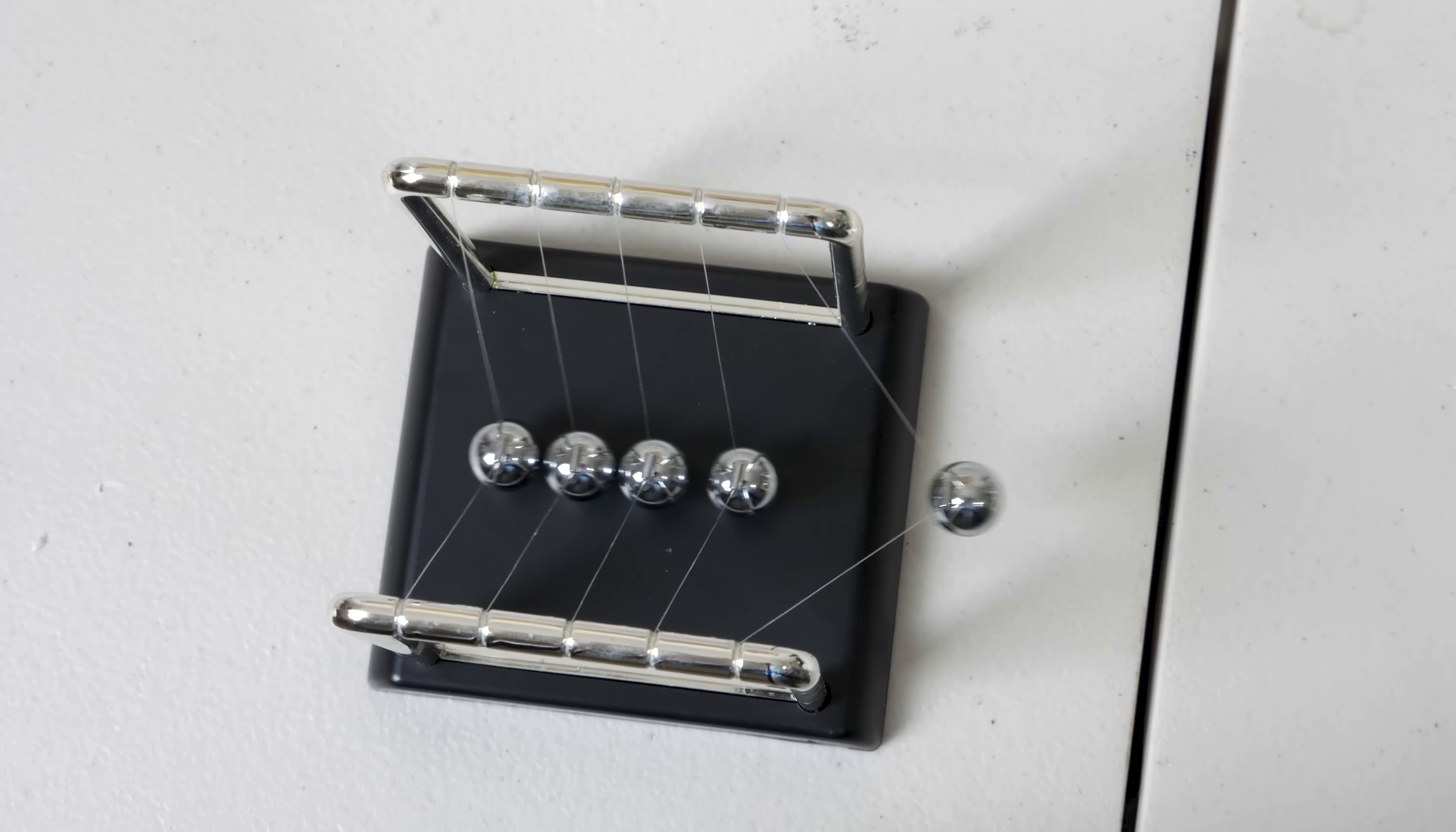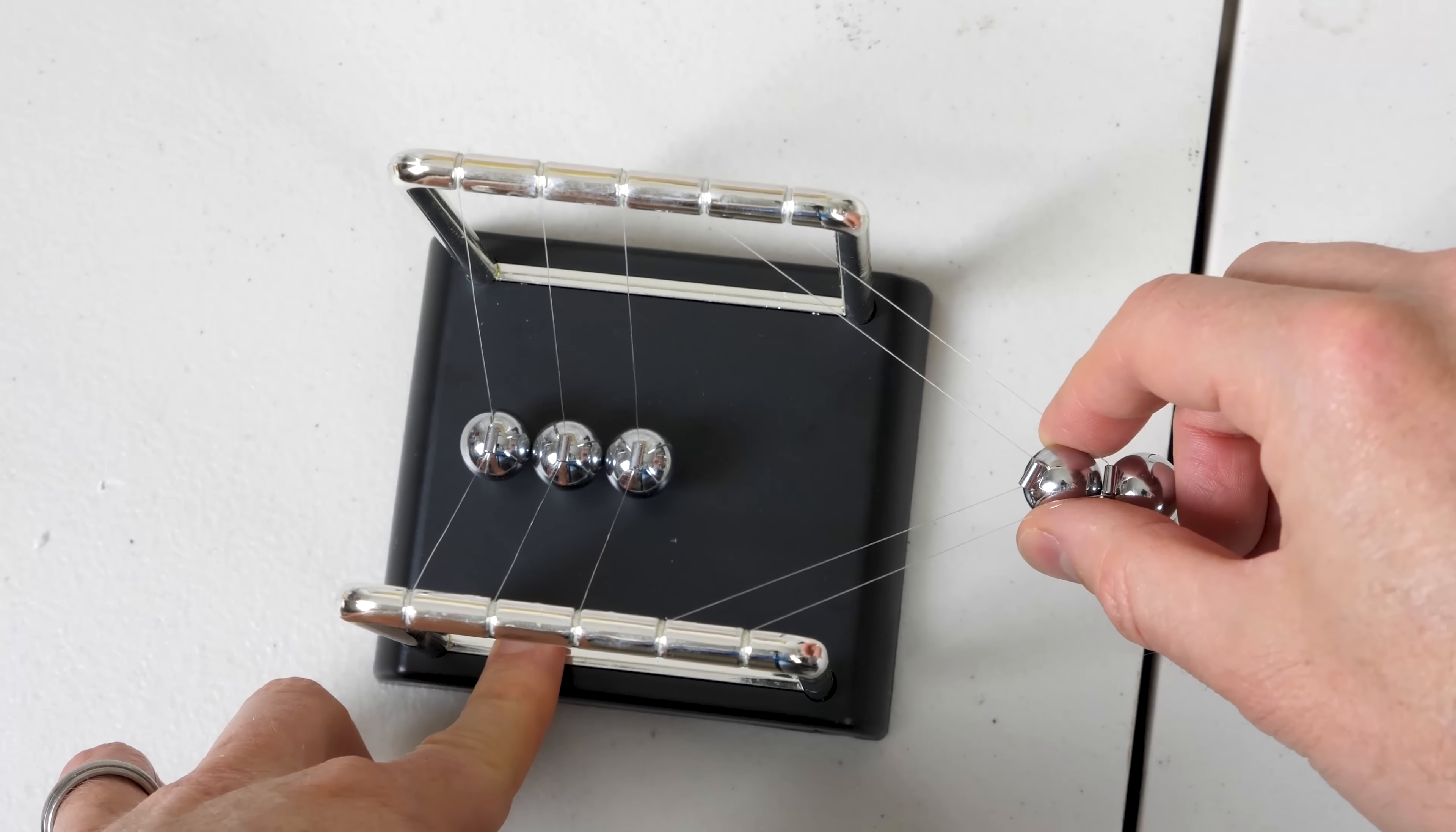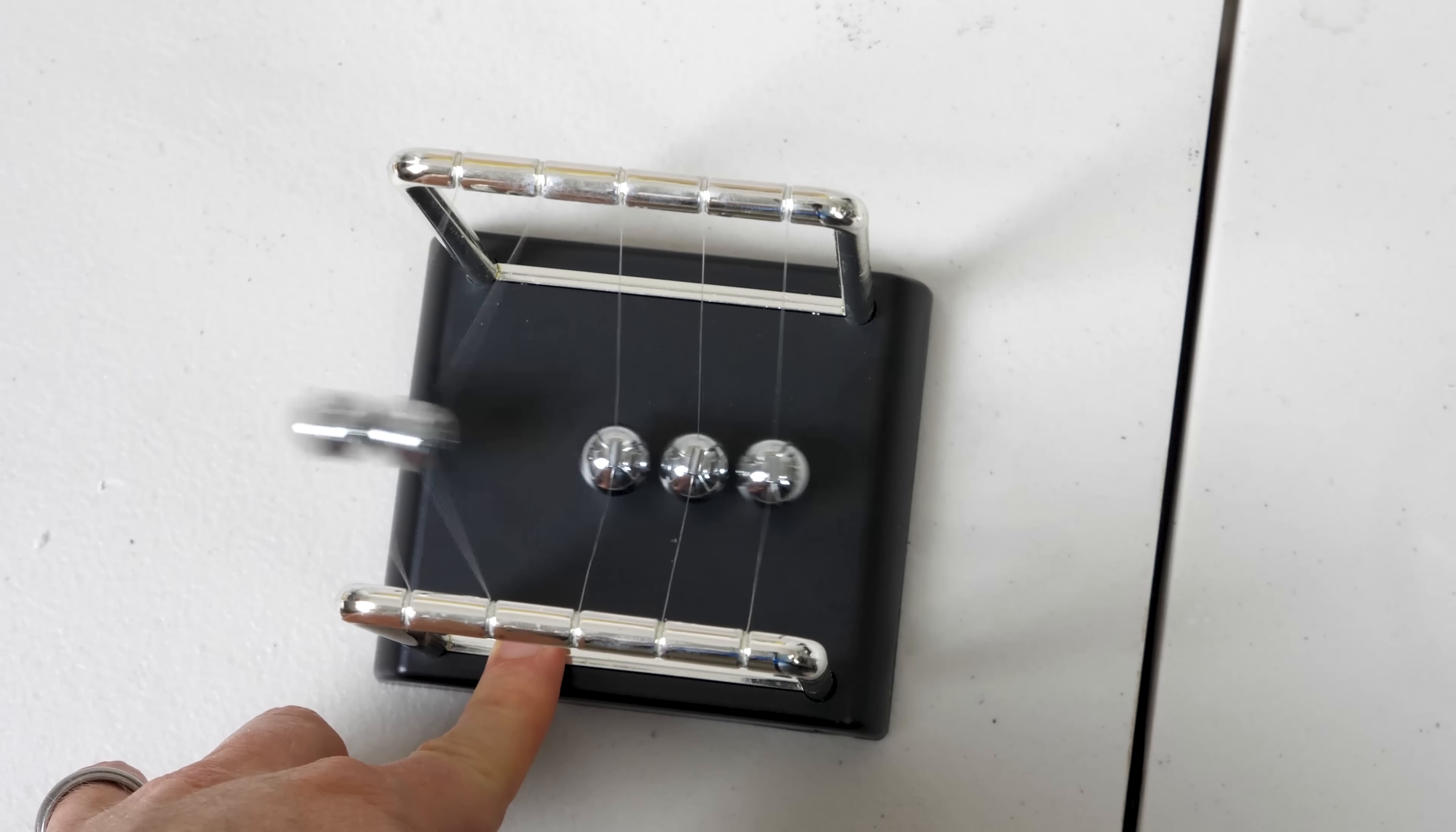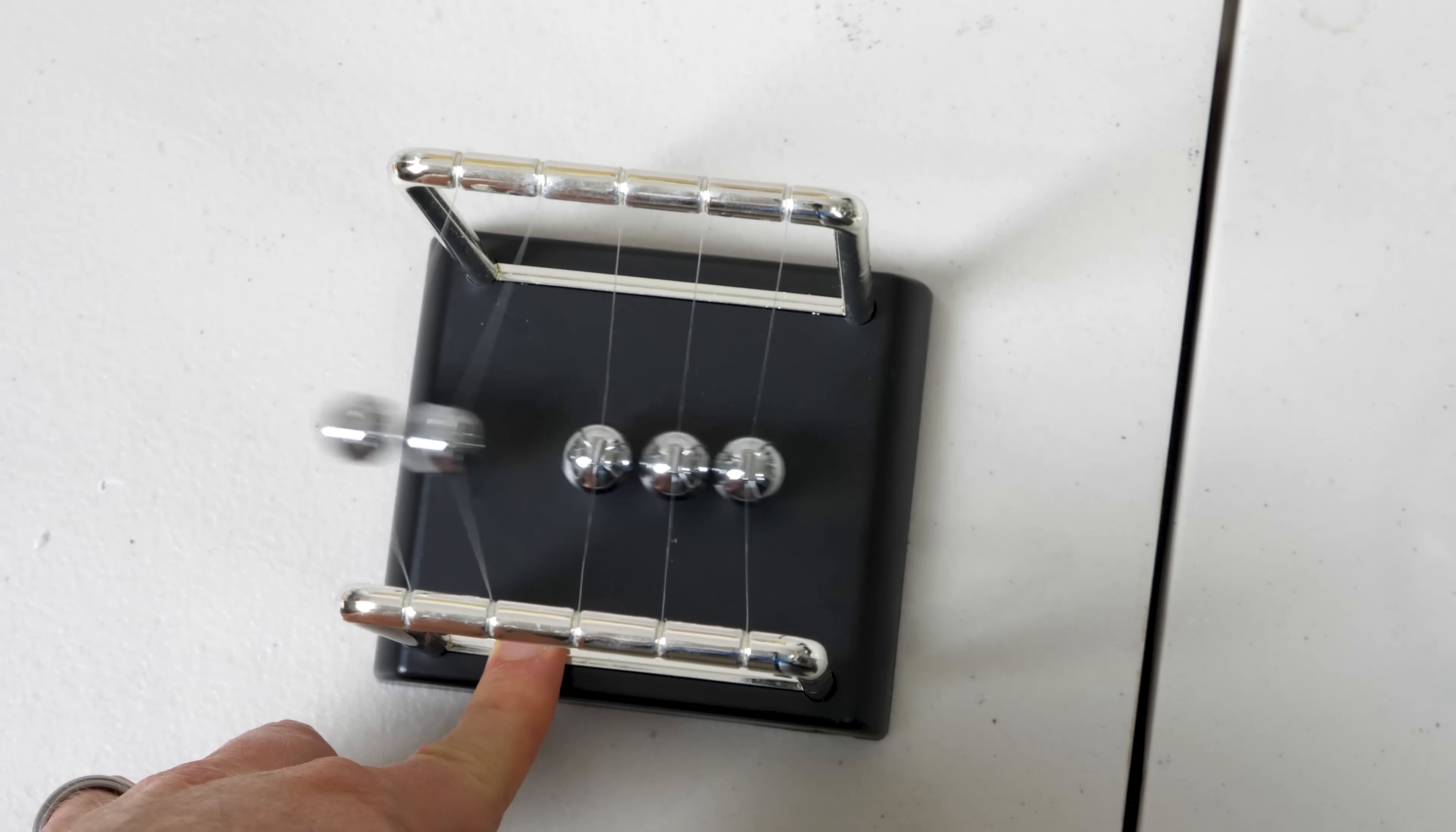It just goes back and forth and back and forth. But now watch what happens when I let two of them go at the same time. The middle one just kind of stays in the middle, and now it knocks two off the other end, and they come back and knock two off the other end.